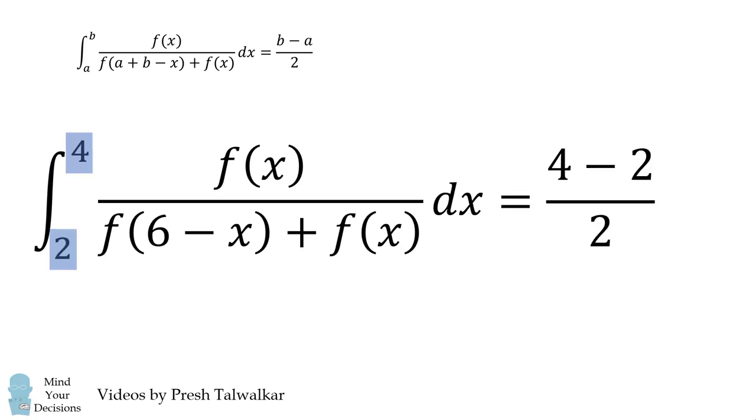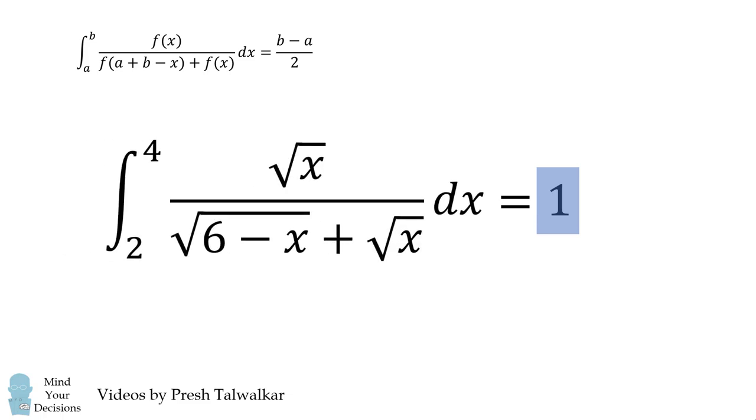So this answer will be equal to 4 minus 2 all over 2, and the answer is 1. Incredible—we solved this complicated integral very simply using this formula.